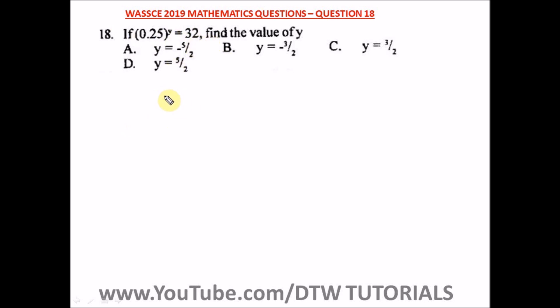This is indices, so you have to be fast on simplification. 0.25 is also the same as saying 25 divided by 100, raised to power y, and 32 can also be simplified to 2 raised to power 5.